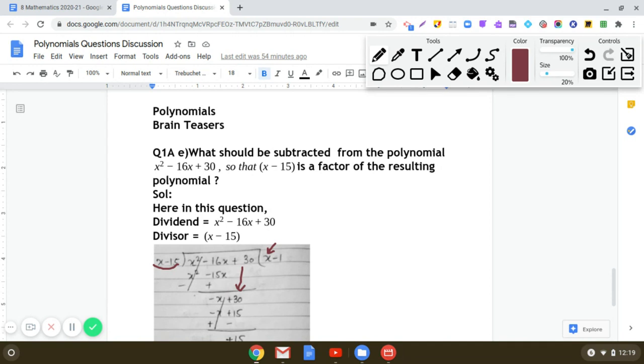Now you see that the remainder is 15. So that means we need to subtract 15 from x² - 16x + 30 so that the remaining polynomial is completely divisible.